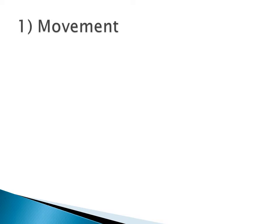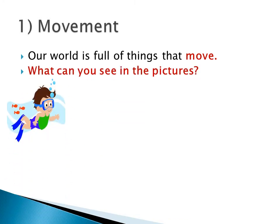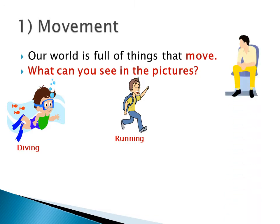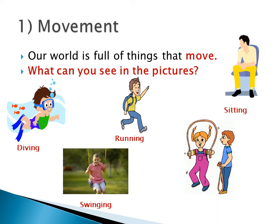First, we are going to study movements. You know that we are a living thing, and living things can move. Our world is full of things that move. What can you see in the picture? The first picture is of a boy who is diving — diving means he goes under the water. This is movement. This boy is running, and this boy is sitting on his chair. This is a type of movement also. And this boy is swinging — swinging means moving backwards and forward. And these boys and girls are jumping. We have to move in our life, and we can search for food. We are living things.